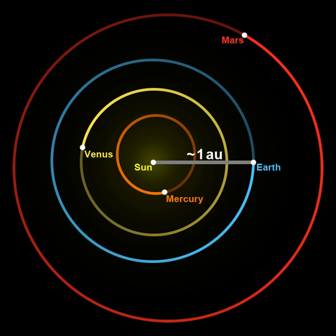A variety of unit symbols and abbreviations have been in use for the astronomical unit. In a 1976 resolution, the International Astronomical Union used the symbol A for the astronomical unit. In the astronomical literature, the symbol AU was common. In 2006, the International Bureau of Weights and Measures recommended 'ua' as the symbol for the unit. In the non-normative Annex C to ISO 80000-3, the symbol of the astronomical unit is also defined.